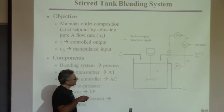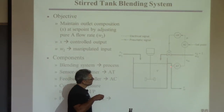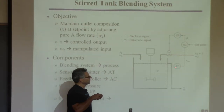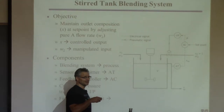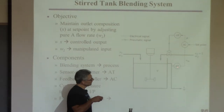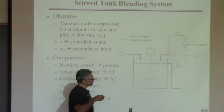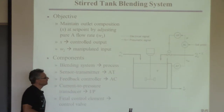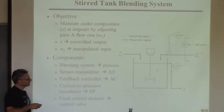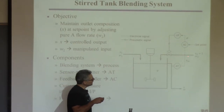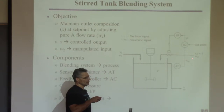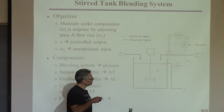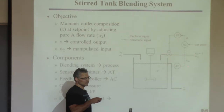When you see a picture like this, there's a transmitter — meaning a measurement is in place. They call it AT for composition measurement. A picture like this means there's a composition measurement, typically done by GC. Then you see a dotted line — a dotted line means this isn't a physical pipe; it's a signal, not a flow.